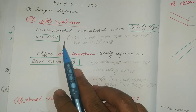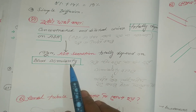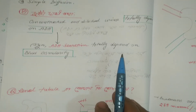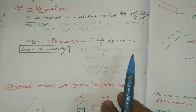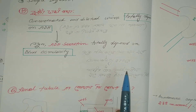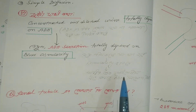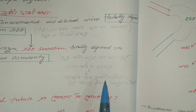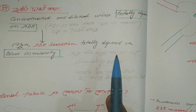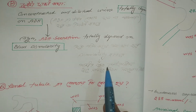Whether concentrated or diluted urine is produced depends on ADH, and ADH secretion depends on blood osmolarity. As such, ADH helps to retain as much water as possible, influencing urine concentration.